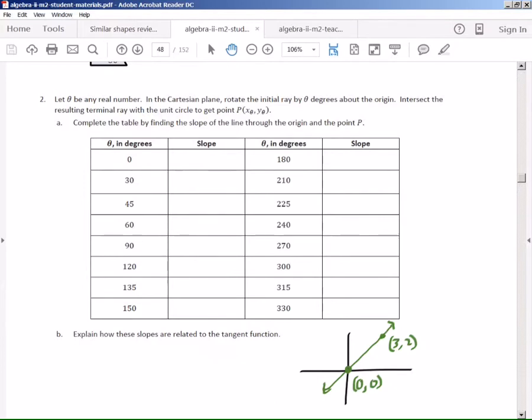Okay, so you can go 1, 2 for the rise, and 1, 2, 3 for the run. So you know it's 2 over 3.